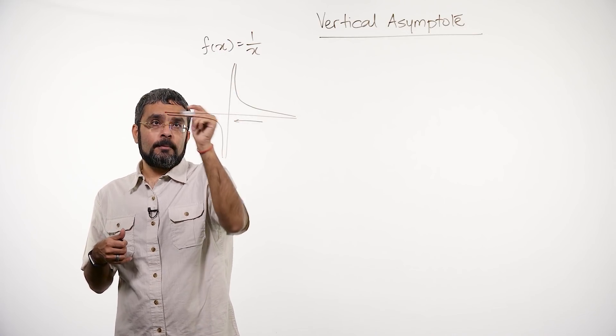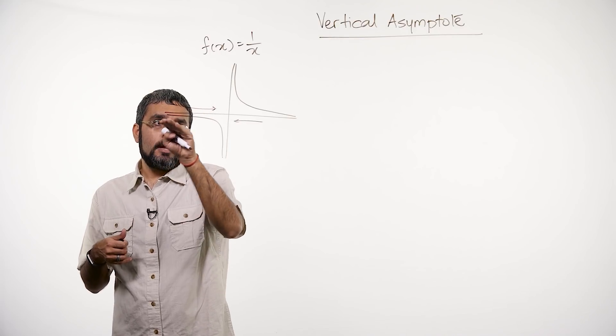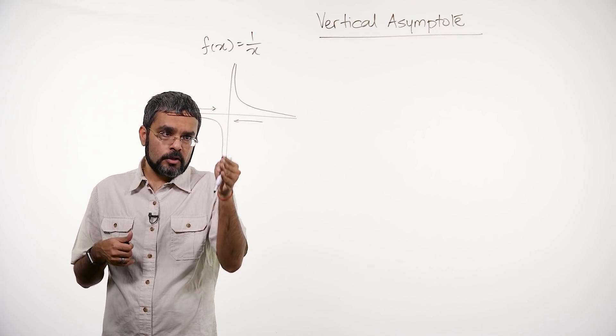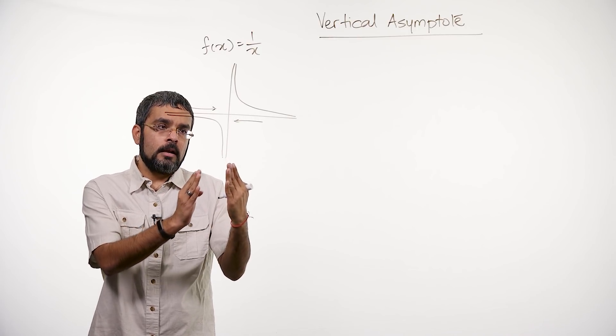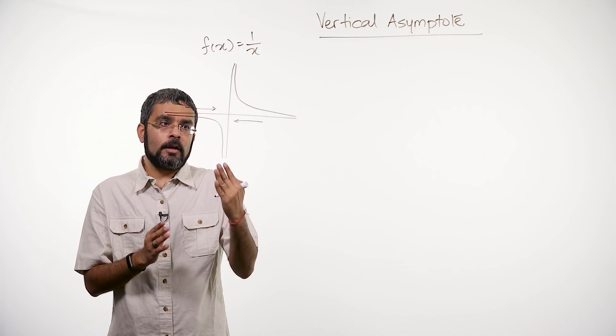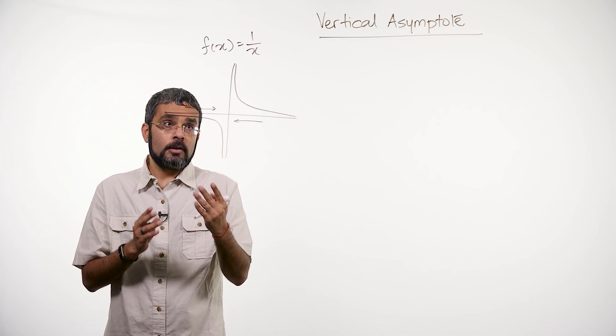And same way, as I approach 0 from the left, my function values go down. So this function is going down. It's going closer and closer to the y-axis. Again, almost becomes vertical, but not. So at a point, it's almost hard to figure out whether it touches the y-axis or not.